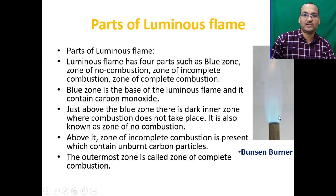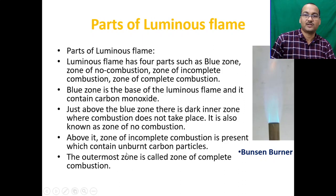You can see the blue zone here. Just above it is a dark inner zone where combustion does not take place — this is also known as the zone of no combustion. Above that, the zone of incomplete combustion is present, which contains unburnt carbon particles. The outermost zone is called the zone of complete combustion. You can see the outer periphery of the flame on the Bunsen burner.